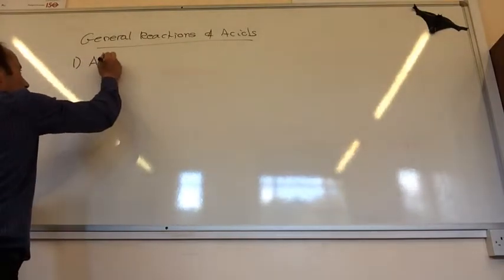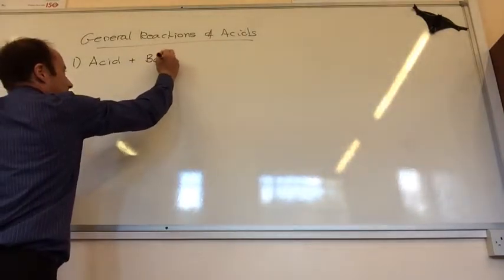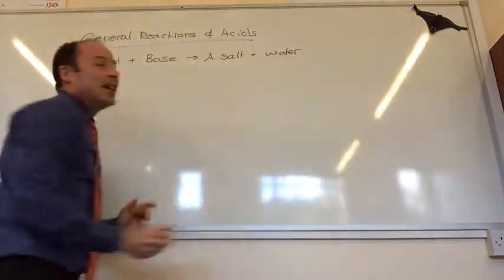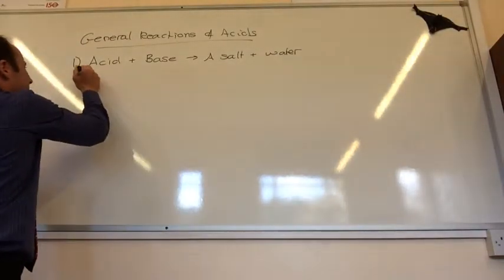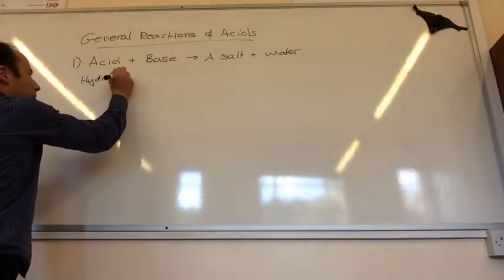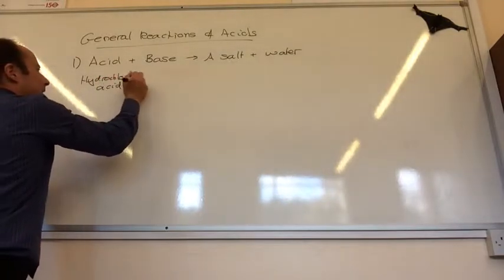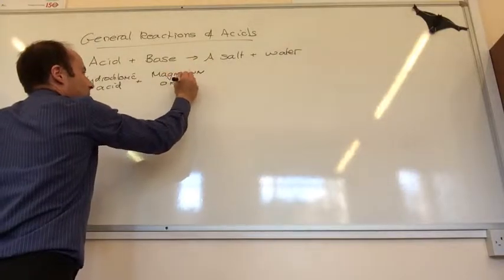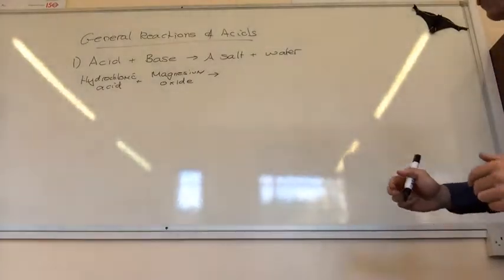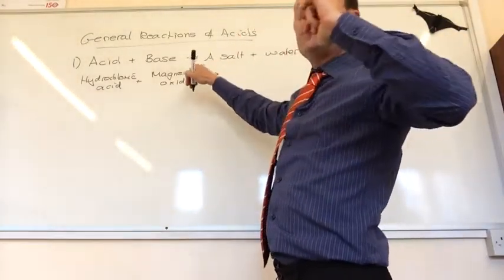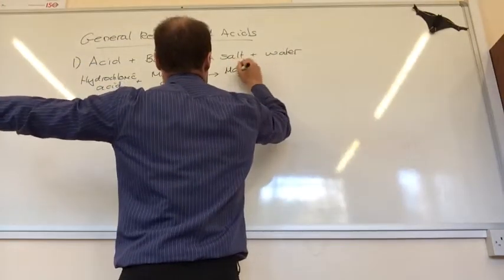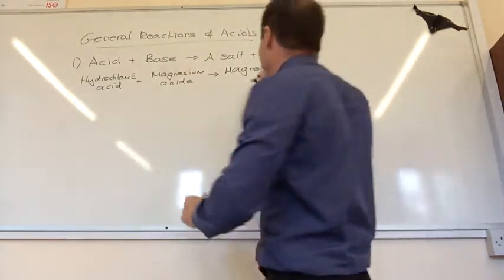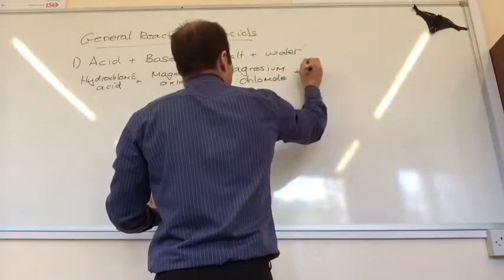Number one, if I start you off, acid plus base gives a salt plus water. An example of that would be hydrochloric acid. A base is normally a metal oxide, so I'm going to use magnesium oxide for that one. Can you remember how I name a salt? I start the first part, magnesium chloride. Fabulous. The first part of the name comes from the base. The second part of the name comes from the acid, hydrochloric acid gives me chloride. So that gives me magnesium chloride plus water.